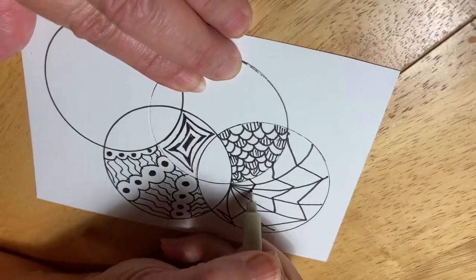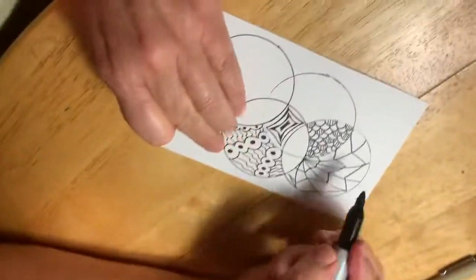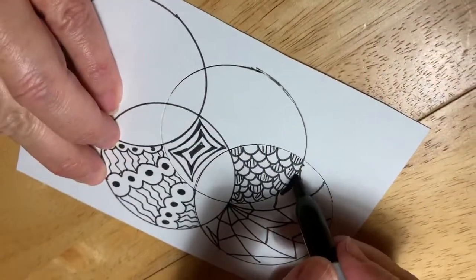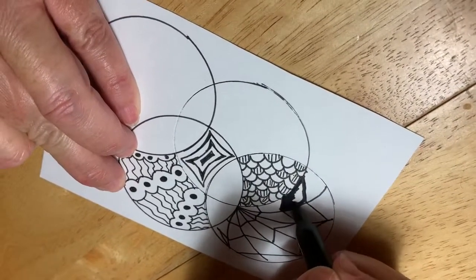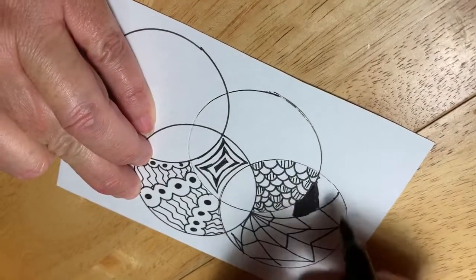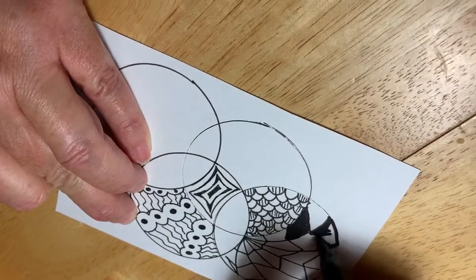And then what I'm going to do is I'm going to take my Sharpie because it covers a little bit better. And we're just going to come in here and pick where you want to start and fill one of these in. And we're going to alternate so that we're not going to have black on black. It'll be black, white, black, white.